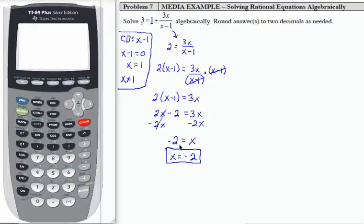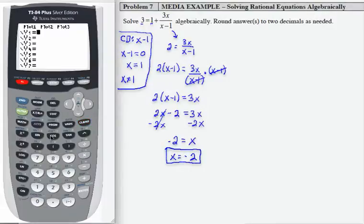Now let's go ahead and check this graphically by going to our y equals on the calculator. And I'm going to enter 3, that's my y1. Then I'm going to enter 1 plus 3x divided by—now be very careful here—I'm going to put parentheses x minus 1.